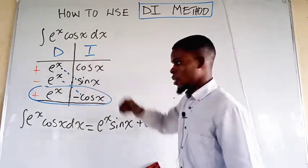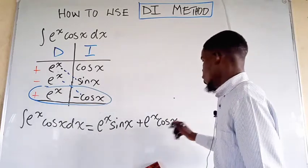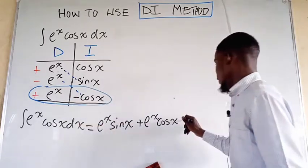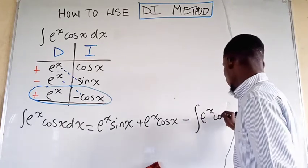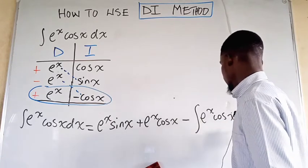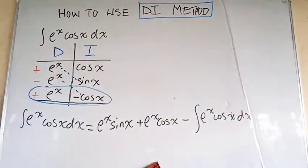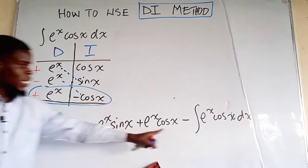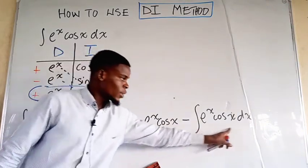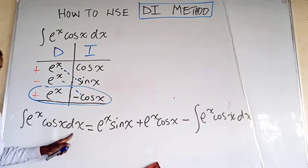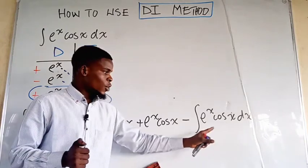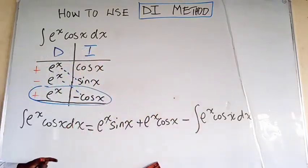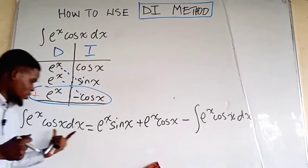Now we are done multiplying the diagonals. We now have to integrate the product of the last row. So multiplying negative with positive, we're going to have negative, then the integral of e to the power of x times cosine of x dx. You observe that the product of the last row contains the same integral as the original question — what you have been asked to find is also repeated here.